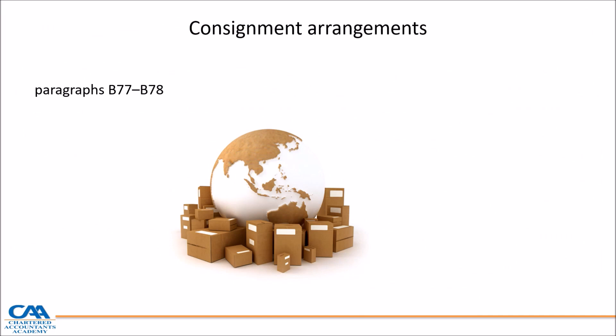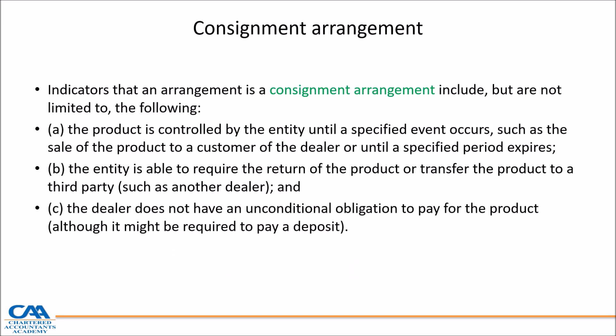Consignment arrangements: your B77 deals with this. Indicators that an arrangement is a consignment arrangement include: the product is controlled by the entity until a specified event, such as sale of the product to a customer; the entity is able to require return of the product; and the dealer does not have an unconditional obligation to pay for the product. So you send stock on consignment — if it doesn't get sold, the dealer doesn't need to pay for it.